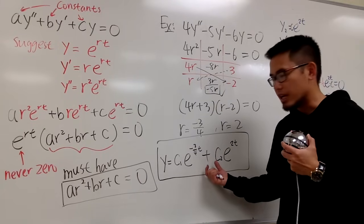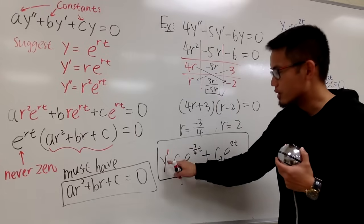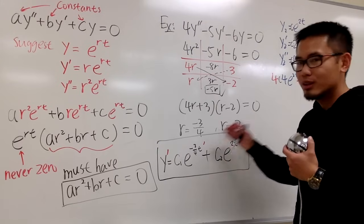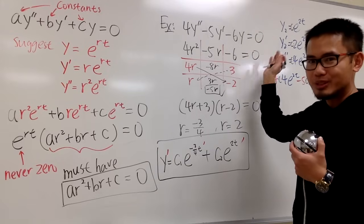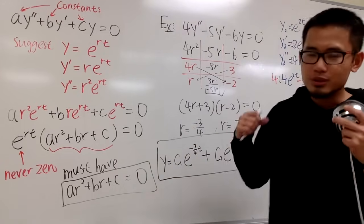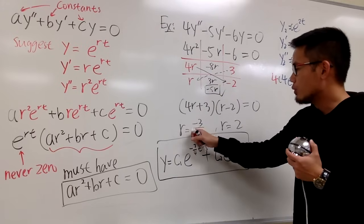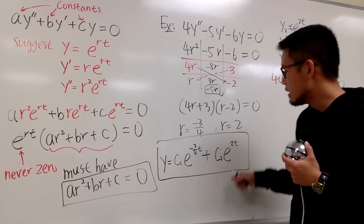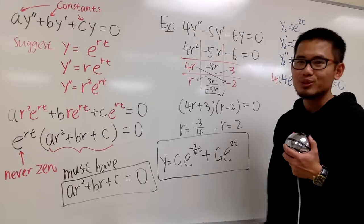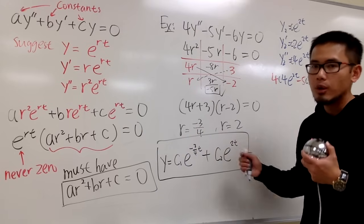We can add them together because when you differentiate y, you just differentiate each part separately, plug everything in, and get 0 = 0 again. To summarize: get the characteristic equation, solve the quadratic in r. If you get two different r values, form e to the first r times t and e to the second r times t, multiply by c1 and c2, and add them together — that's the general solution. This is the first situation. In my next video, I'll show you what happens when the two r values are the same.